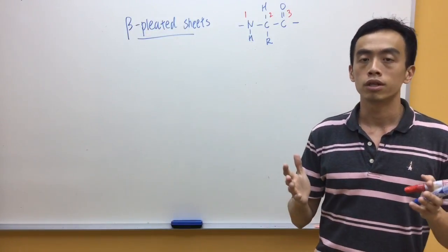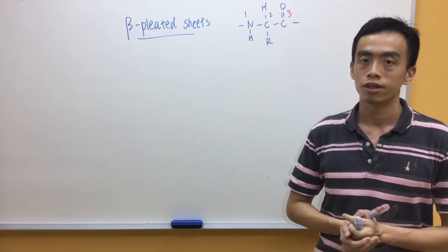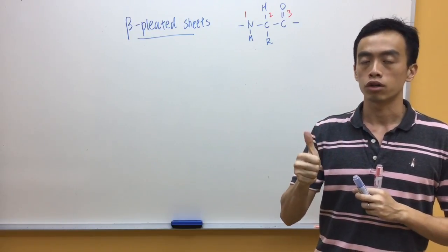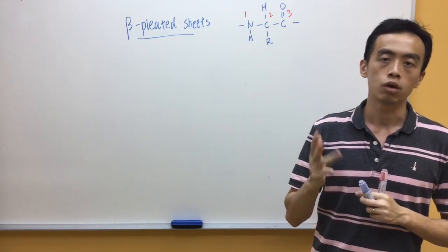In this video, we will learn how to draw the beta-pleated sheets. Now again, for protein structure, we have four levels: the primary structure, the secondary structure, the tertiary and the quaternary structure.